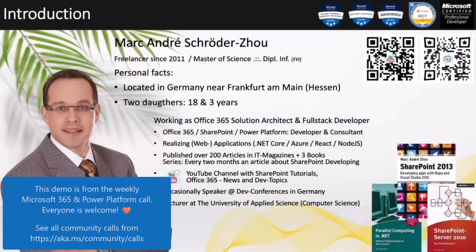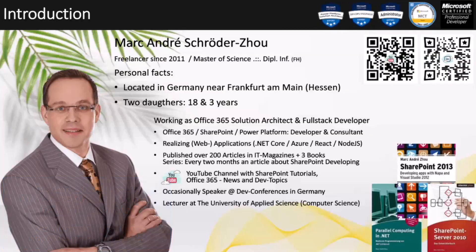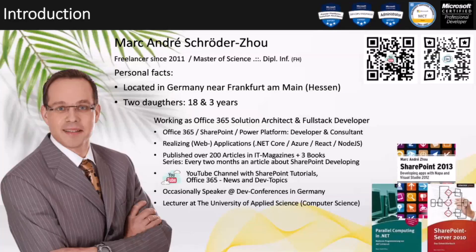My name is Marc-André Schröder-Joe and I live in Germany. On the slide you can see some basic facts about my work experience. I've been working as a freelancer since 2011 and I do IT consulting in different fields. My passion is developing applications as a full-stack developer, mainly with ASP.NET Core, Node.js, React, and Azure. Another passion of mine is to introduce SharePoint in companies since 2001 — yes, really 2001 — and to help companies get the full advantage of this wonderful and flexible product, especially these days with SharePoint Online and Office 365.